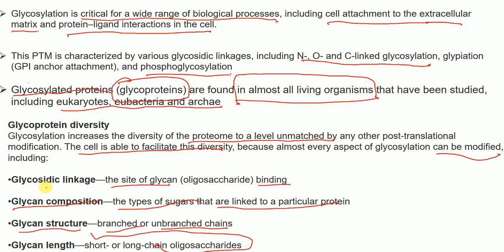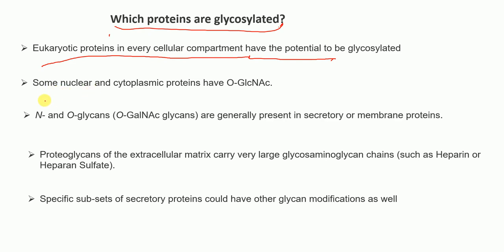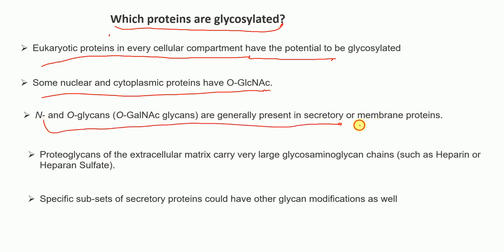Which proteins are glycosylated? Eukaryotic proteins in every cellular compartment have the potential to be glycosylated. Some nuclear and cytoplasmic proteins have O-GlcNAc modifications. N-glycans are generally present in secretory or membrane proteins. Proteoglycans of the extracellular matrix carry very large glycosaminoglycan chains such as heparin or heparan sulfate.